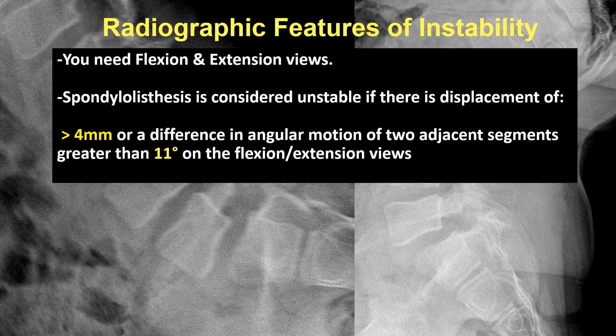Just because a spondylolisthesis is present does not mean that segment is unstable. To measure for instability, utilize x-rays to see if the segment moves more than four millimeters in the lumbar spine on flexion-extension. Another thing to look at is angular motion, which can be between 11 to 20 degrees depending on the spinal level — angular motion of more than 11 degrees can be indicative of instability. Remember, MRI is the gold standard for evaluating ligamentous injury, not x-ray.